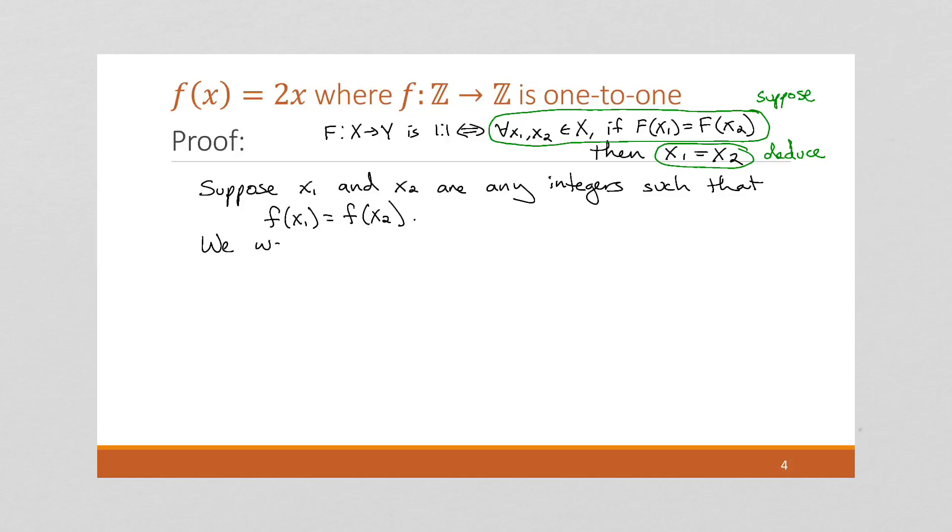So suppose x1 and x2 are any integers such that f of x1 equals f of x2. We want to show that x1 equals x2. Well, by the definition of f, if f of x1 equals f of x2, then, well, let's look at the definition. f is given up here to be 2x. And so we know that 2 times x1 must equal 2 times x2. Well, if we divide by 2 on both sides, we get that the 2's cancel, and we get that x1 equals x2, which is what we're trying to show.